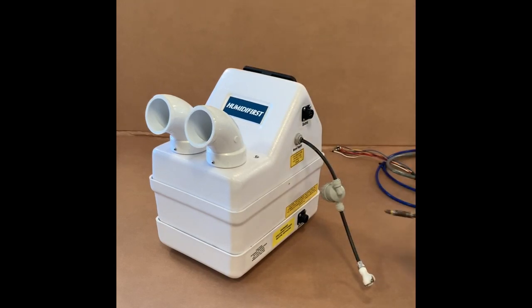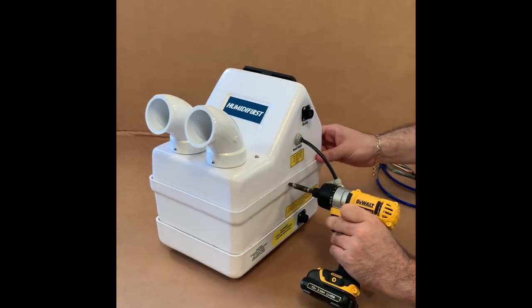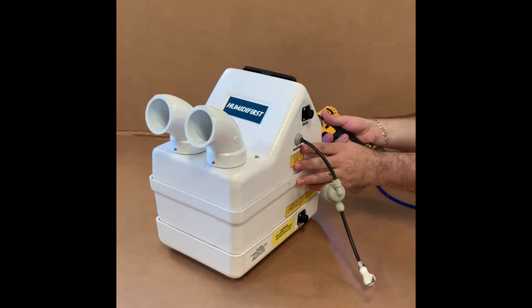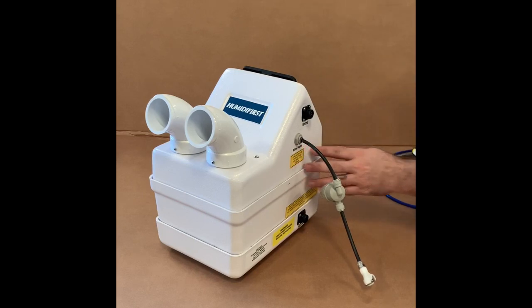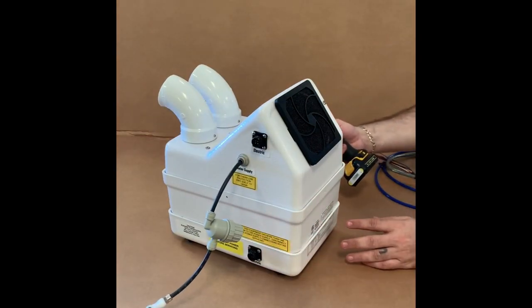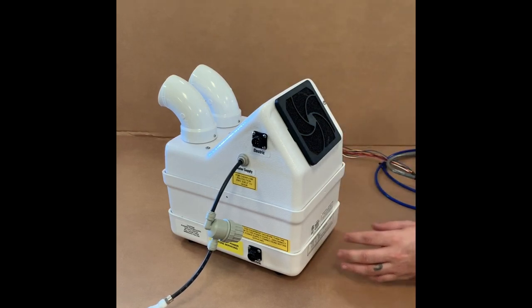Now remove the screws that hold the top of the humidifier to the bottom. On a MISPAK 5 there will be three set screws located on each side, and on a MISPAK 15 there will be a total of six.